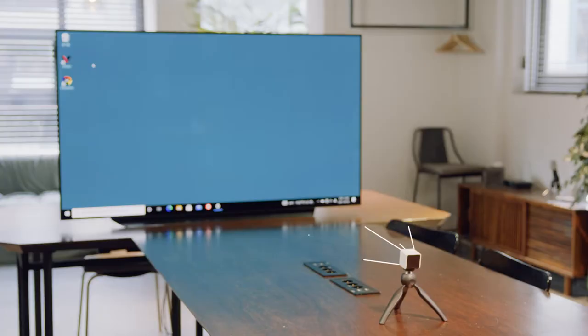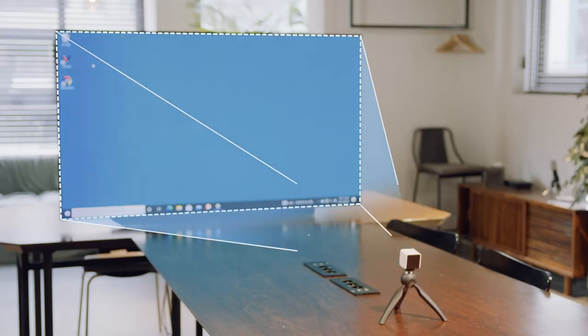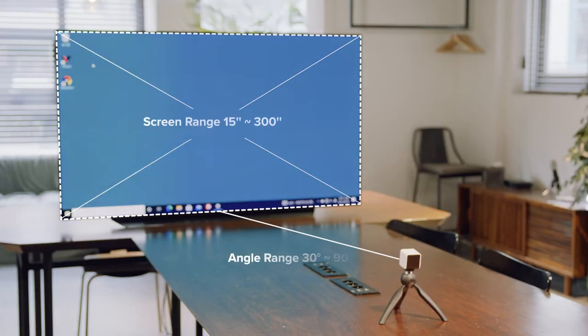V-Board is an interactive whiteboard system that transforms your ordinary displays into touch screens. It's made up of a sensor camera, stylus pen, and native software.